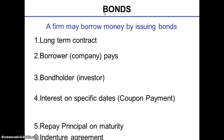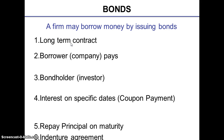Now let's look at what a bond means. A firm may borrow money by issuing bonds; therefore bonds are also a kind of debt which corporations usually issue in order to borrow money. A bond is essentially a long-term contract under which a borrower agrees to make payments of interest and principal on specified dates to the holder of the bond, known as the bond holder, who is also the lender.